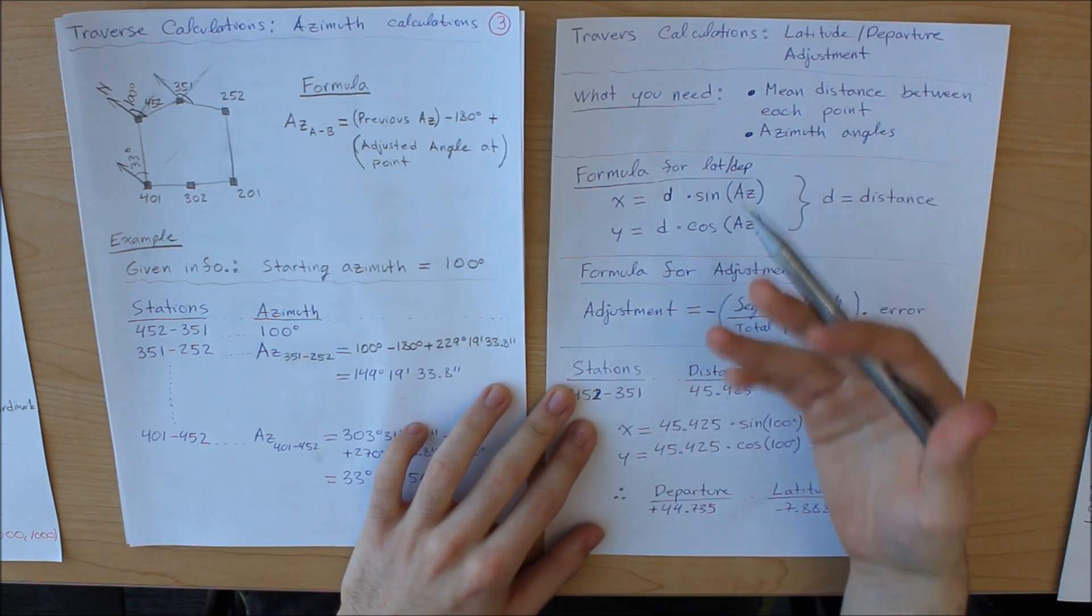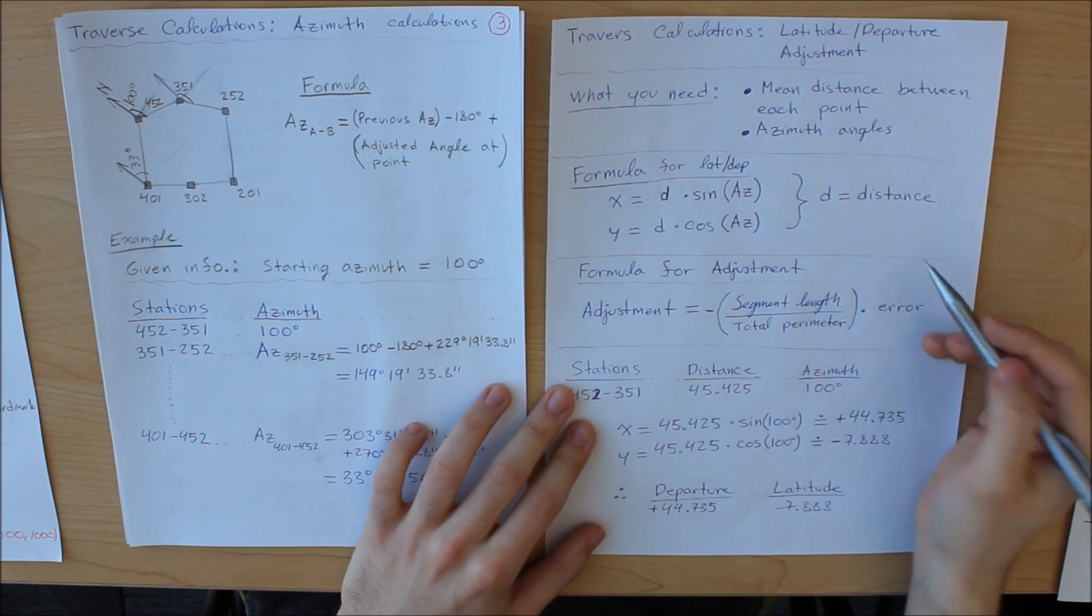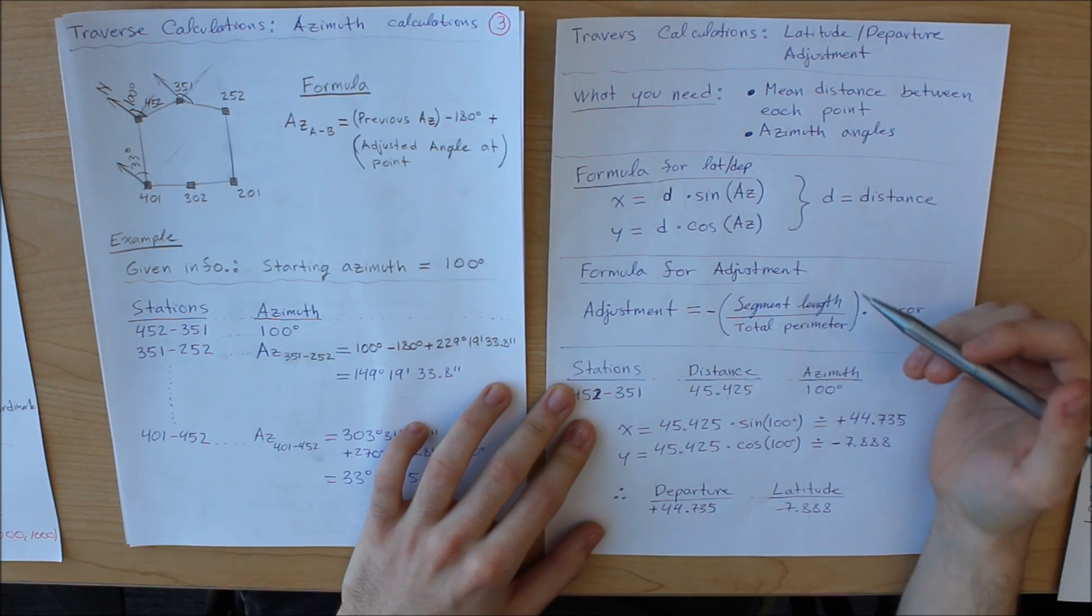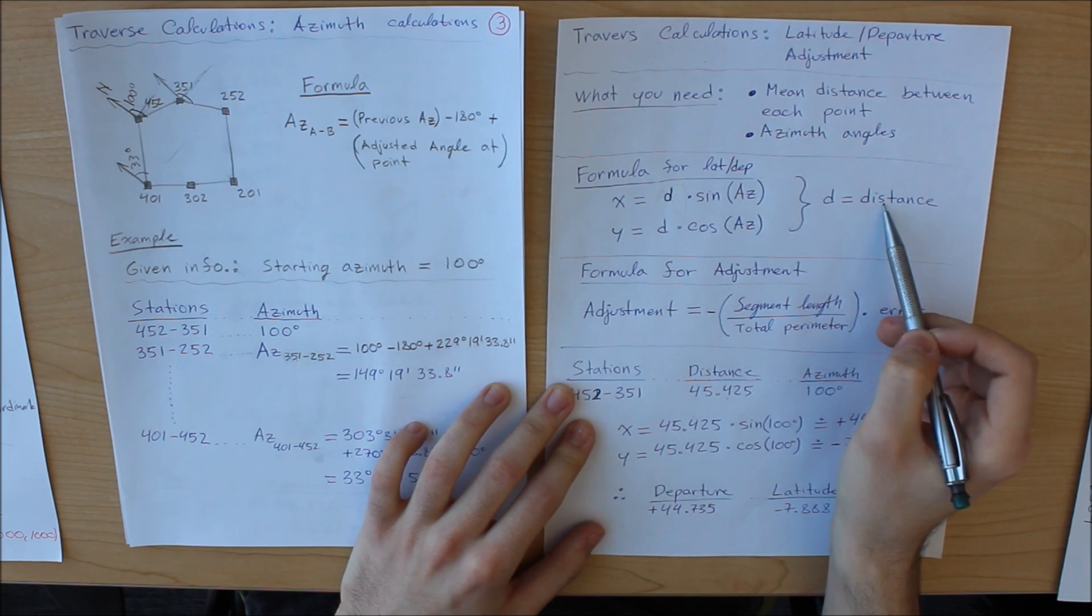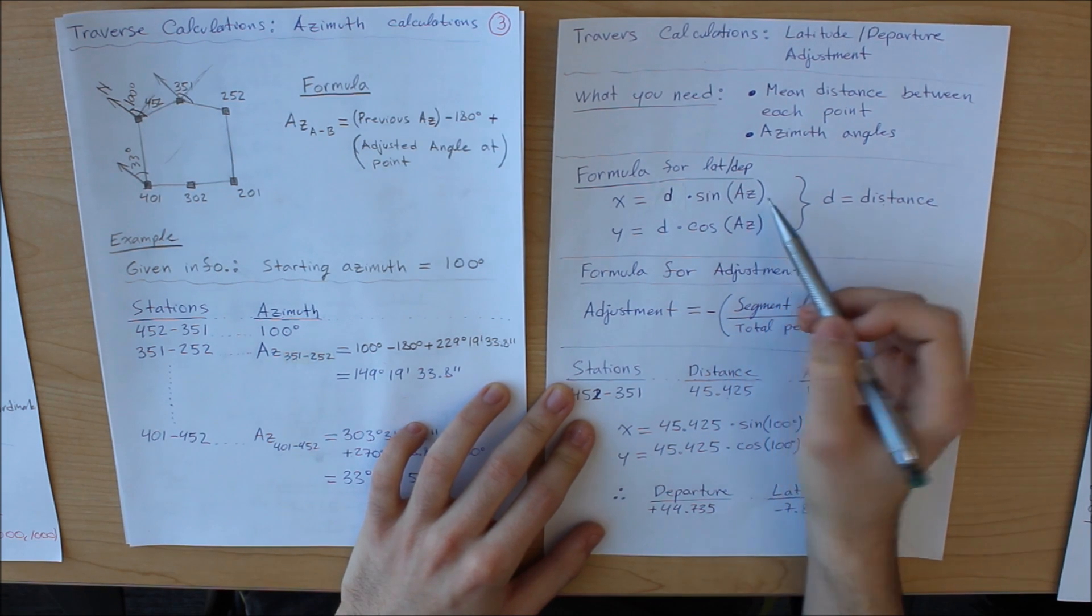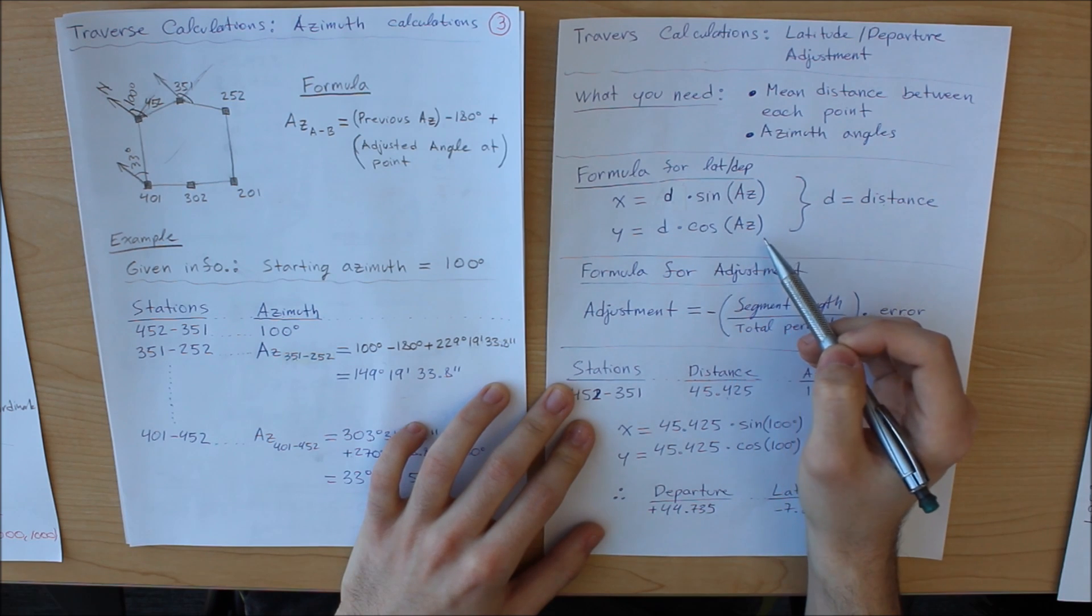Next, you have two formulas that you must employ to perform this calculation. The first is you must break down each of your points into x and y components. So x is equivalent to d, d being the distance, multiplied by sine of the azimuth. The y is equivalent to d times cos of the azimuth.